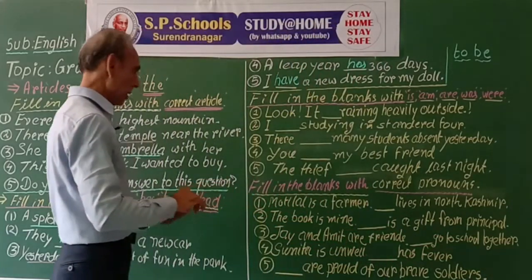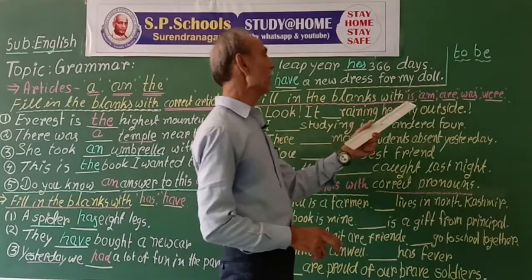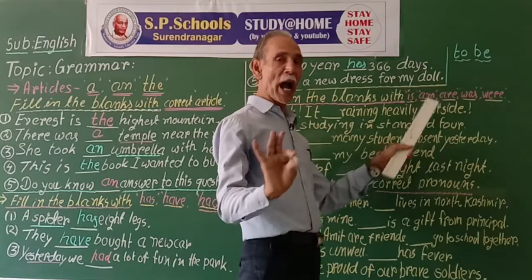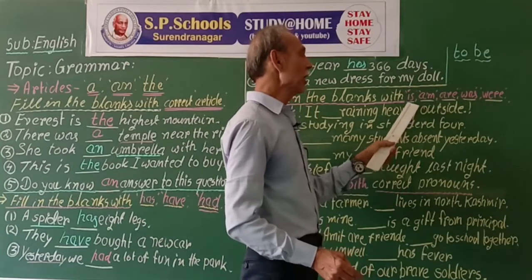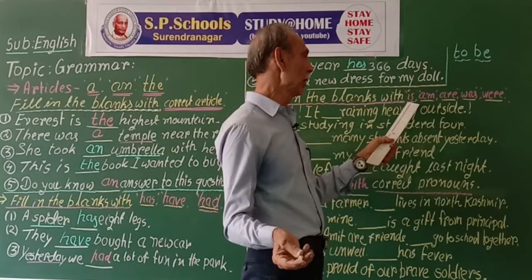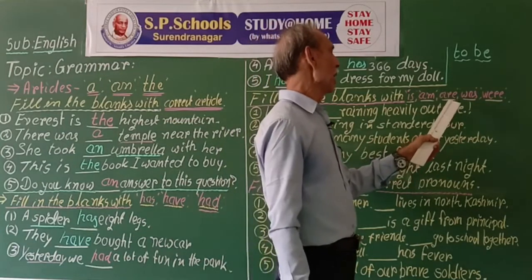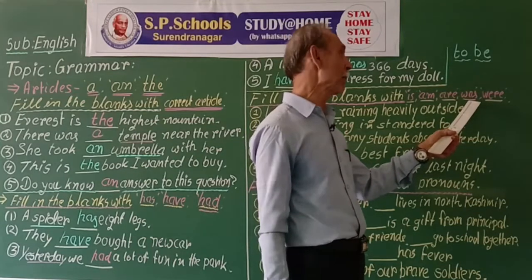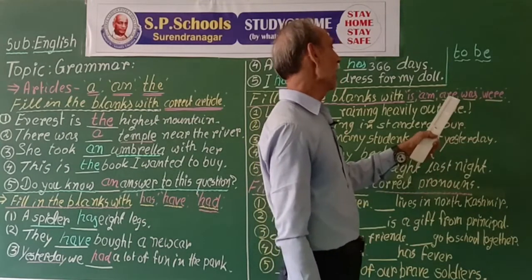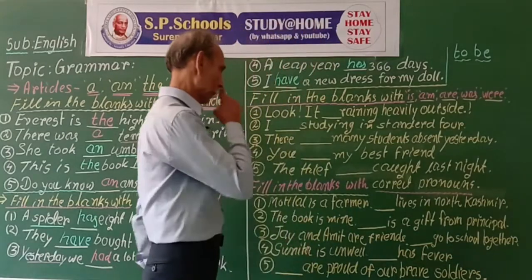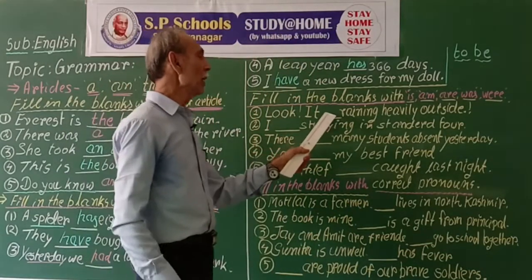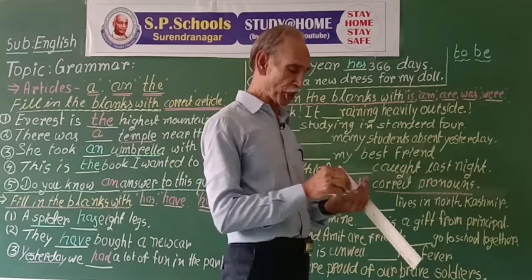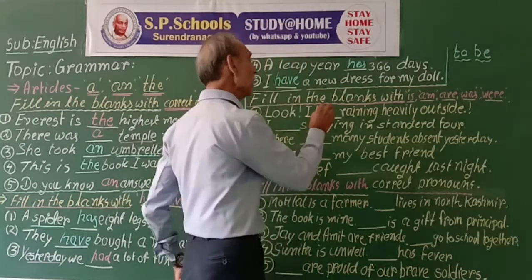Fill in the blanks using 'is', 'am', 'was', or 'were'. 'Am' is always used for 'I' only. 'Is' is for third person singular or a singular noun. 'Was' is for third person singular noun and for 'I' in past tense; elsewhere we use 'are' or 'were'. Look — it is raining heavily outside. This is the present tense condition: it is raining outside.